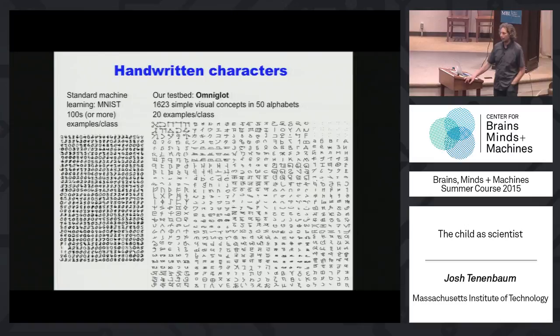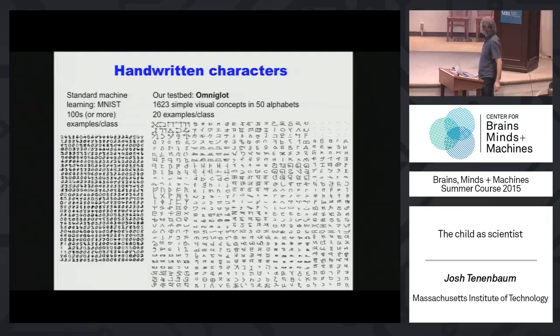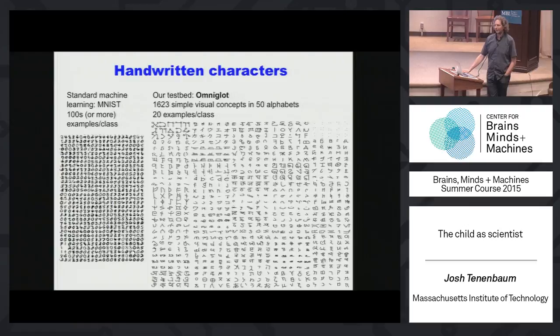Brendan Lake is a machine learning person also well known for deep learning, and now a postdoc at NYU. Where we think we're building up to is learning something like the program of an intuitive physics or intuitive psychology. But here we're just talking about learning object concepts. We've been doing this work with a dataset of handwritten characters. I'll put it in contrast with the more famous MNIST dataset. How many people have seen the MNIST dataset? How many have actually used it? It's driven a lot of basic machine learning research, including deep learning.